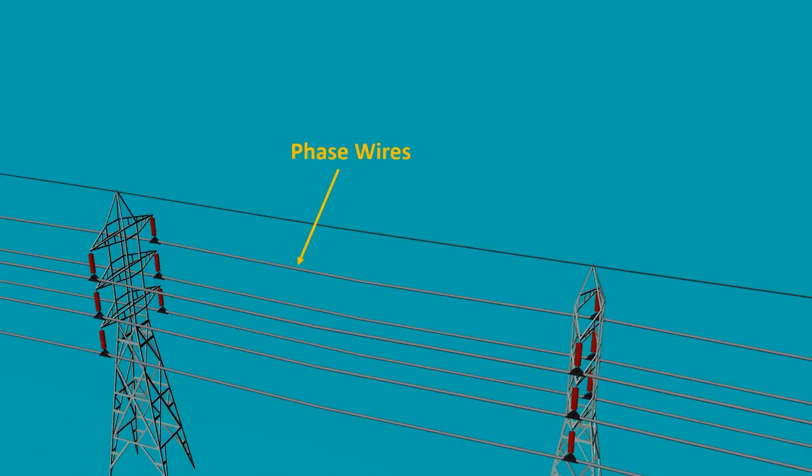You might have seen these wires on top of towers above the high voltage power lines. So what's the need of these wires when we already have phase wires for the transmission of electric power? Well, these wires are either OPGW or earth wire or shield wire.